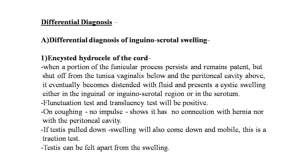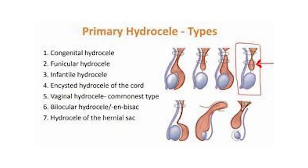Differential diagnosis of inguinal scrotal swellings: Encysted hydrocele of the cord — when a portion of the funicular process persists and remains patent, but is shut off from the tunica vaginalis below and the peritoneal cavity above, it becomes distended with fluid presenting a cystic swelling in the inguinal or inguinoscrotal region or scrotum. Fluctuation test and translucency test will be positive. On coughing, no impulse — so it has no connection with hernia nor with the peritoneal cavity. On traction test, the swelling comes down and is mobile. Testes can be felt apart from the swelling.